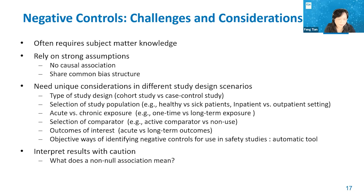There may need to be unique considerations in different study design scenarios. We should be cautious when we interpret the results. For example, what does a non-null association mean in a study that applies negative control outcomes? Was the assumption made in this study? Was there any other source of bias that may differ with negative controls? The observed non-null association does not necessarily indicate major confounding of the exposure-outcome association.